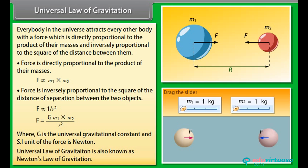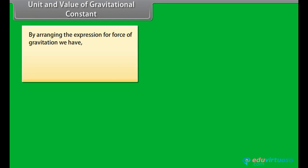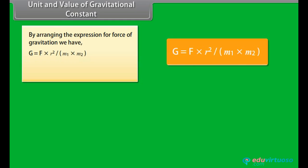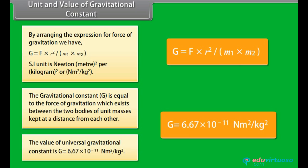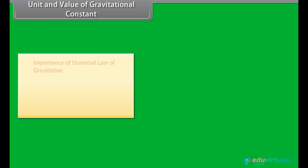Universal law of gravitation is also known as Newton's law of gravitation. Unit and value of gravitational constant: by arranging the expression for force of gravitation, G is equal to F times R squared upon M1 times M2. The SI unit is Newton meter squared per kilogram squared. The value of the universal gravitational constant G is equal to 6.67 × 10⁻¹¹ Newton meter squared per kg squared.